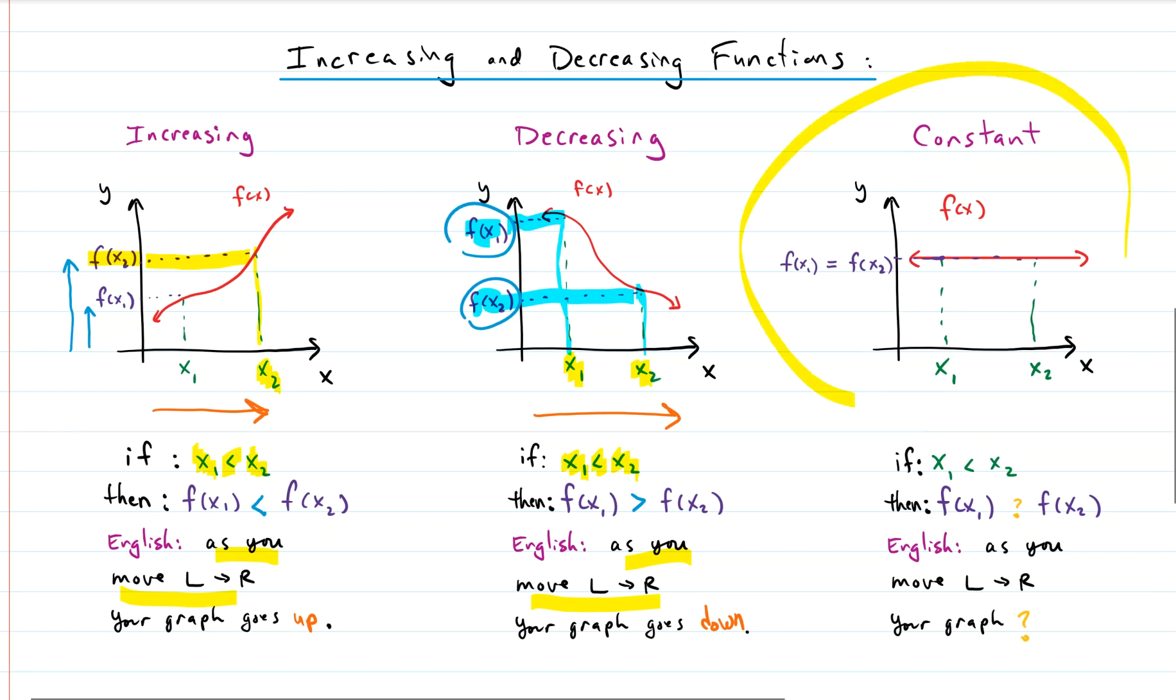We have one more. Let's deal with the constant function. Again, we have our x1 and we have our x2, and we are saying that x1 is smaller than x2, so it's to the left. For a constant function, what happens to the y values? What happens to the corresponding y values? Well, here's the y value for x1, and here's the y value for x2.